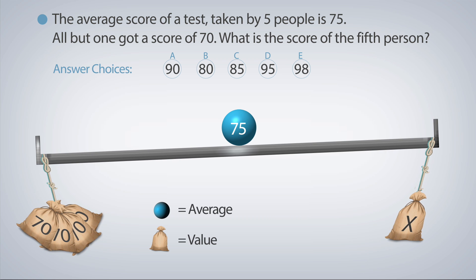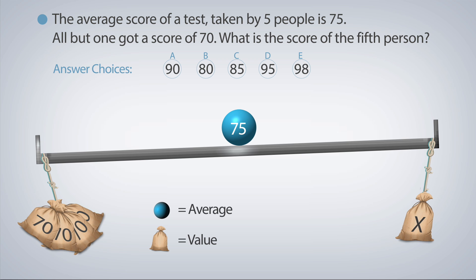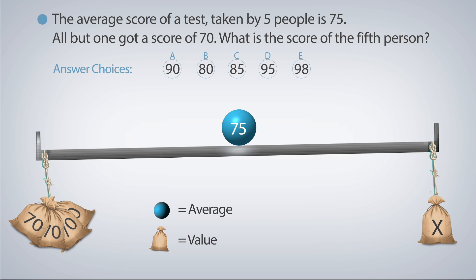Here, we need to find the value on the right that balances the four values we have on the other side of the average.